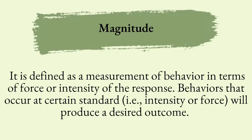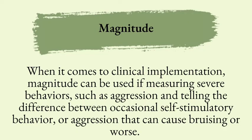Let's move on to magnitude. This is defined as the measurement of behavior in terms of its force or intensity of that particular response. Behaviors that occur within a certain standard of intensity or force will produce the desired outcome. For example, a person needs enough strength to turn a door handle to open a door. When it comes to clinical implementation of magnitude, it can be used for measuring severe behaviors such as aggression. Aggression can cause bruising or even worse. It would be much more concerning to have that lower magnitude of aggression reduced so that it doesn't result in tissue damage.